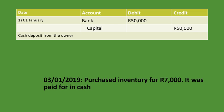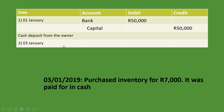On the 3rd of January 2019, we purchased inventory for 7,000 rand and it was paid for in cash. The two accounts are inventory, because we purchased inventory, and bank, because we purchased it for cash. Some people would call it cash instead of bank when putting in the transaction — that's also fine, but we will call it bank. The first account is inventory, and inventory is an asset, so an asset increases on the debit side. We put the date — 3rd of January — then we put inventory with the amount 7,000 rand.